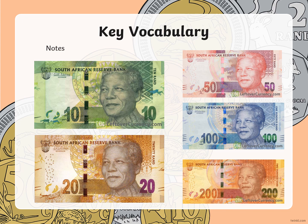Today we are moving on and learning about notes. We have our 10 Rand note, our 20 Rand note, 50 Rand note, 100 Rand note and 200 Rand note. The easiest way to determine which one is which is by looking at the number on each note, and the color.